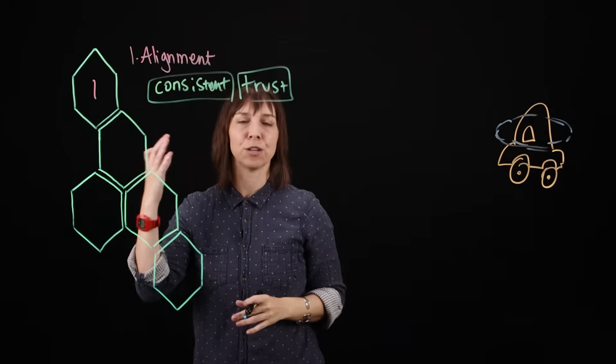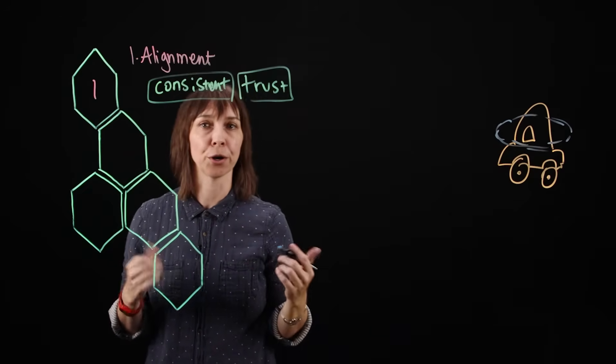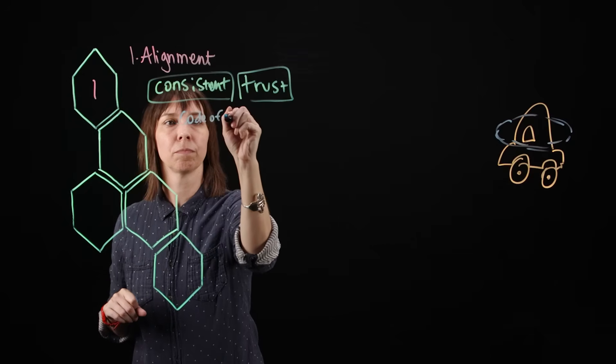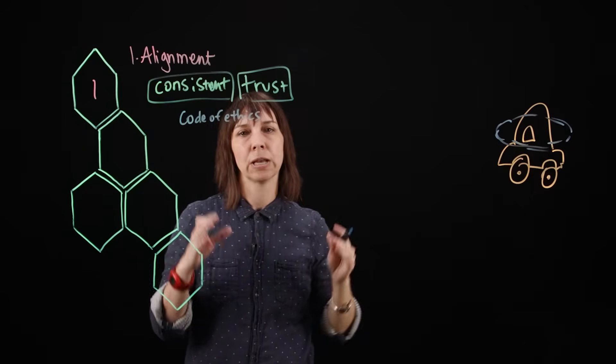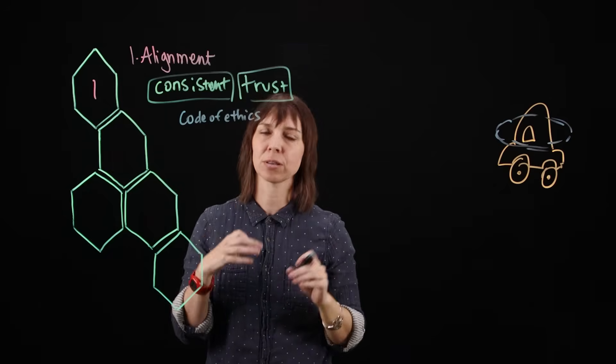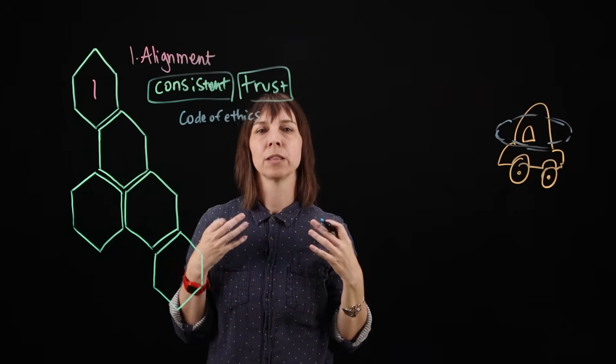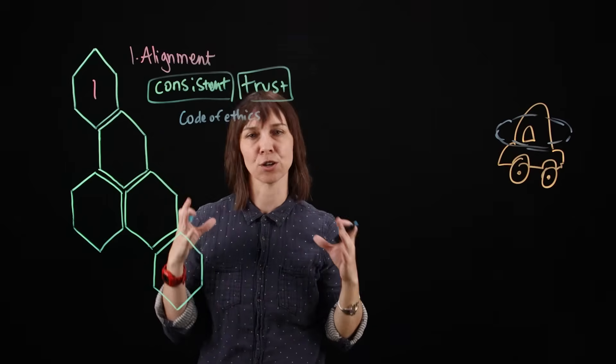Things that we can do to create agentic alignment are create a code of ethics that states the organization's values, ethics, and standards of conduct. This should be embedded into every agent development project.